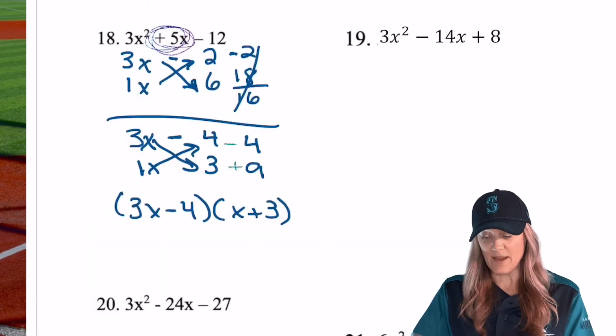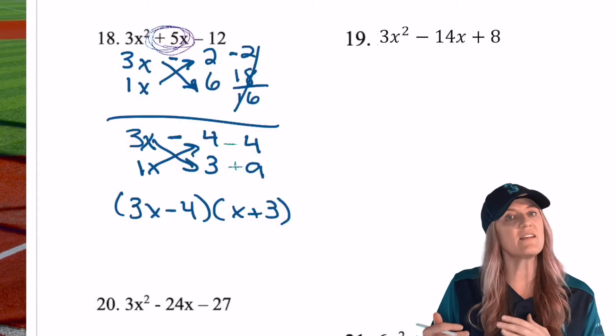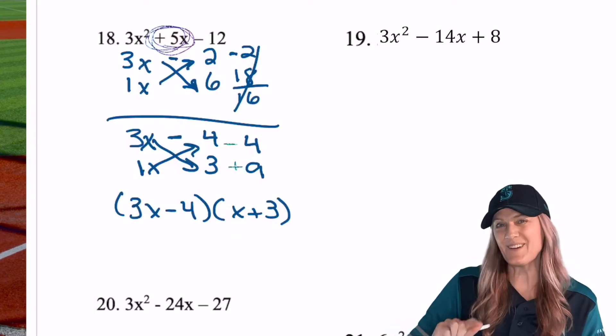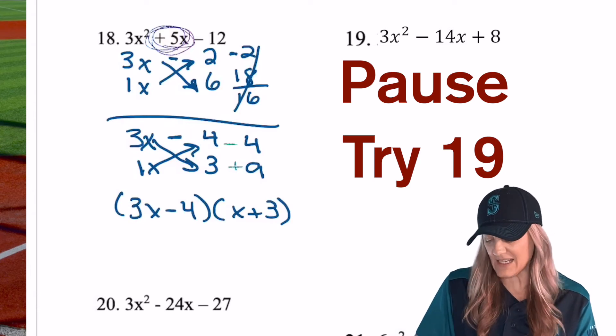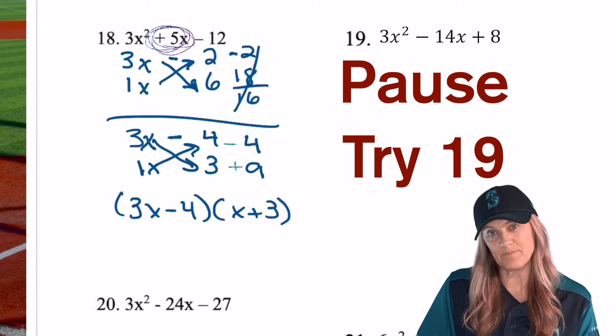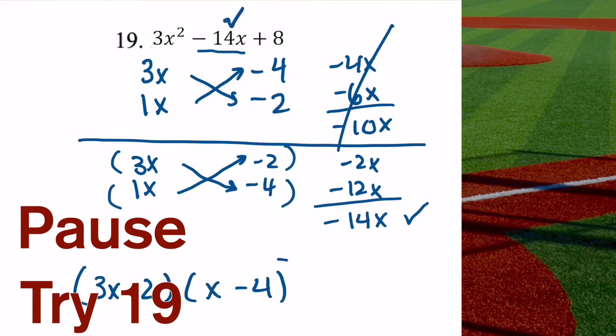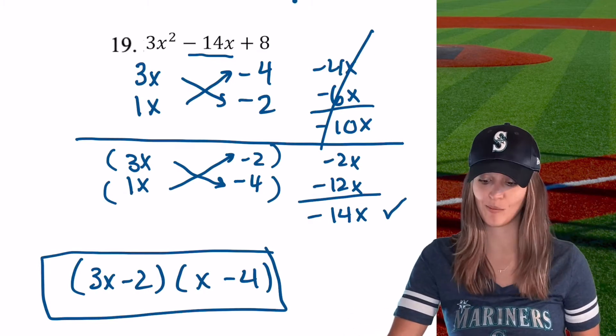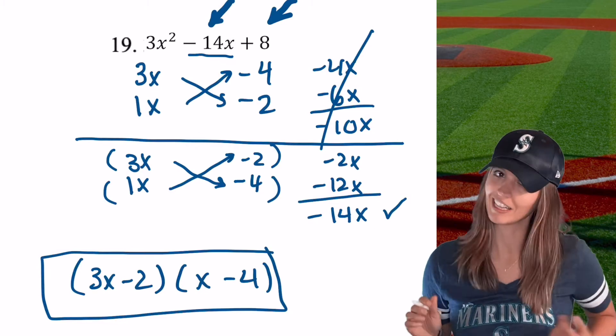Now we're looking at this number 19. c is positive, but b is negative. Whenever c is positive, remember our signs are going to match, either both minuses or both pluses. And of course, if b is negative, they're both going to be negatives. So go ahead and give number 19 a try and we'll check back in with you in a moment.